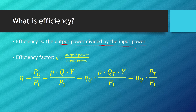We are going to mark the output fluid flow power as P_u, as in P useful, and we are going to mark the input mechanical power as P1. We mark the efficiency factor with the Greek letter eta, and eta is equal to useful power divided by input mechanical power.